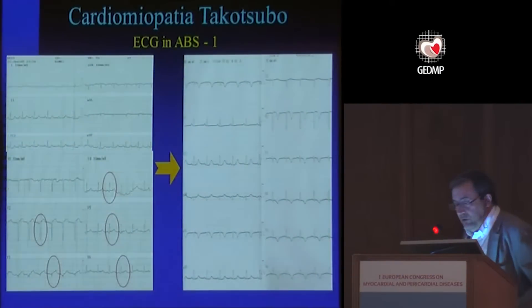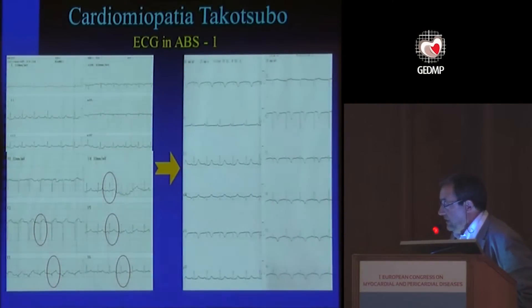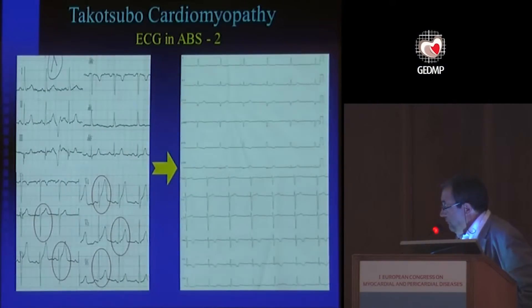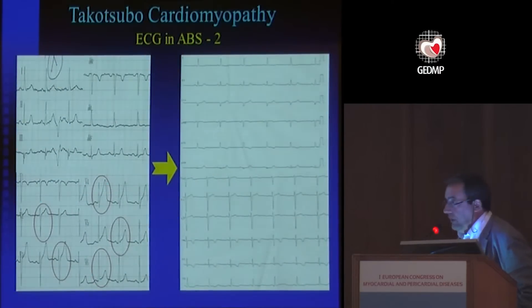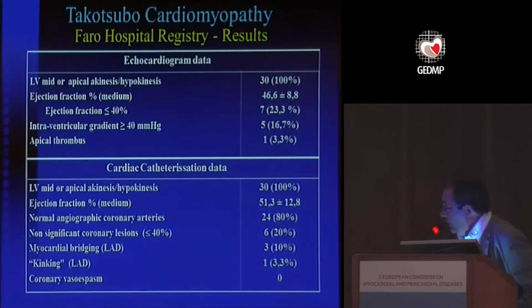This is one example of the electrocardiogram evolution. You can see that inferior leads show ST segment depression. Another example is very similar to myocardial infarction. The echocardiographic data showed dyskinesia or hypokinesia in all patients, also confirmed on ventriculography. The low ejection fraction by both means of diagnosis was very similar.